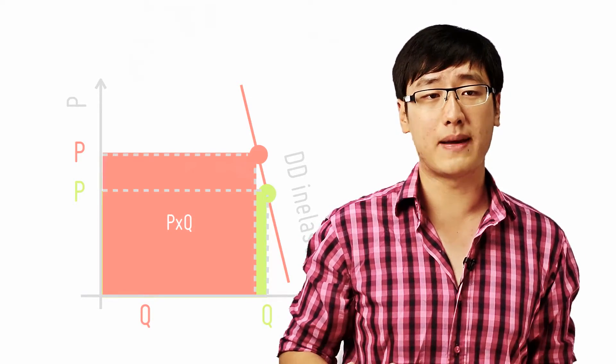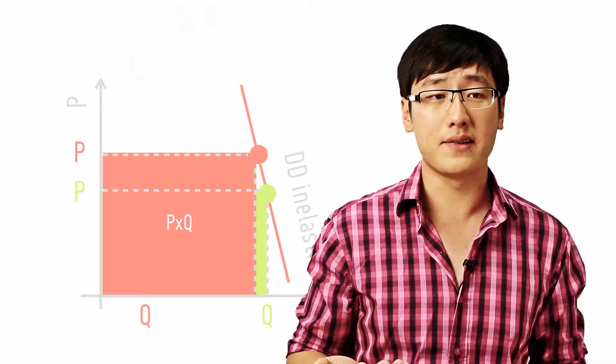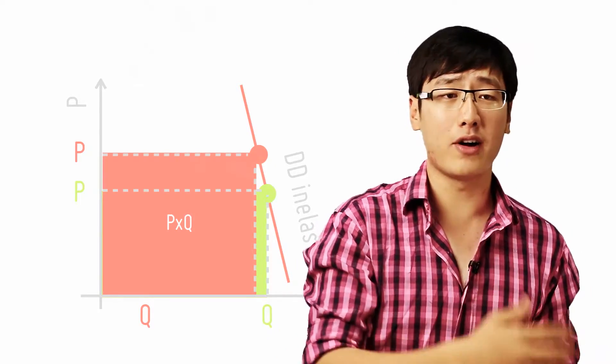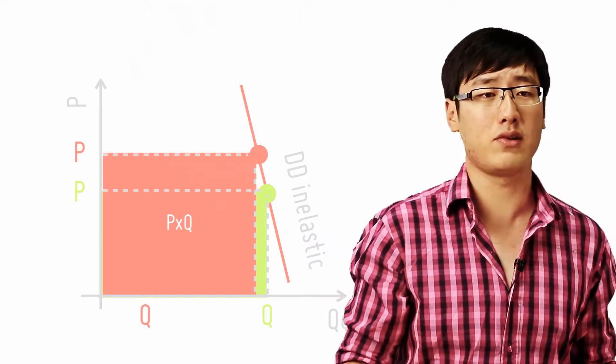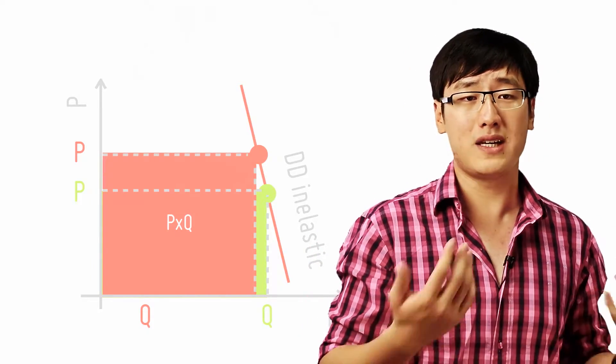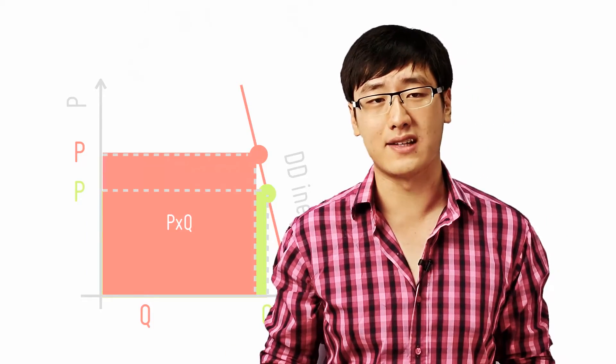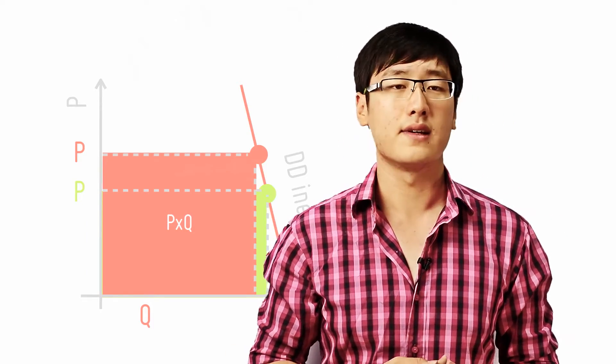Well, the total expenditure will be more than the original because when we increase the price, quantity decreases but nonetheless less than proportionally. The quantity decreases less than proportionally, so P times Q actually increases. Notice how this differs from the case when PED is elastic.